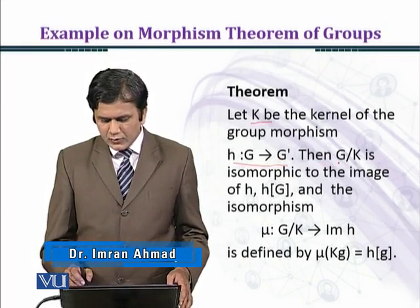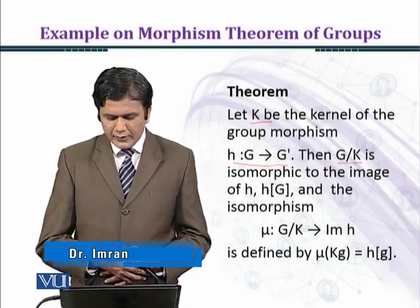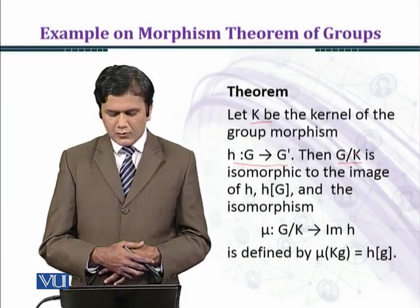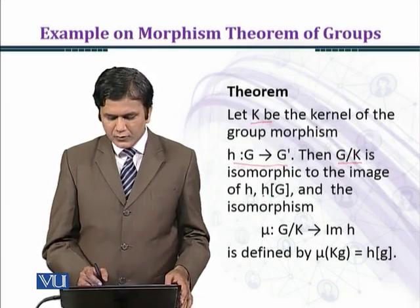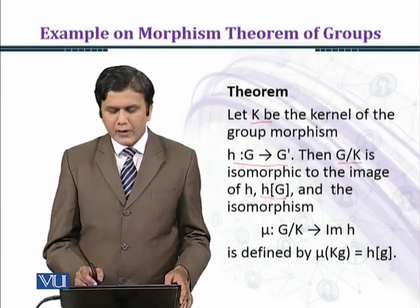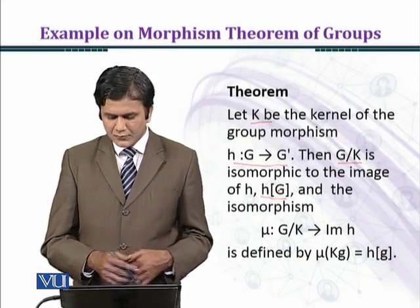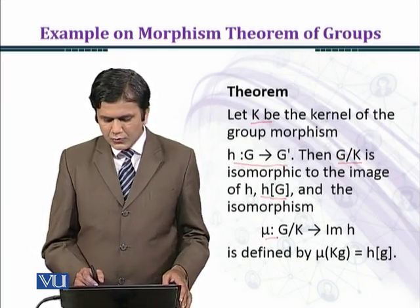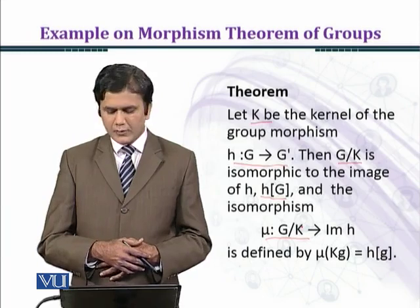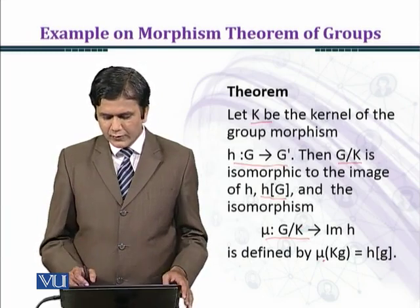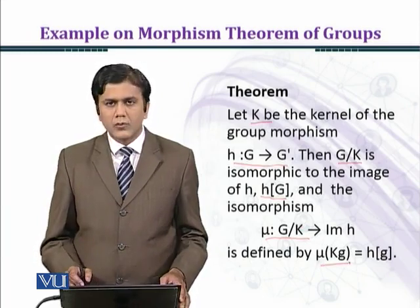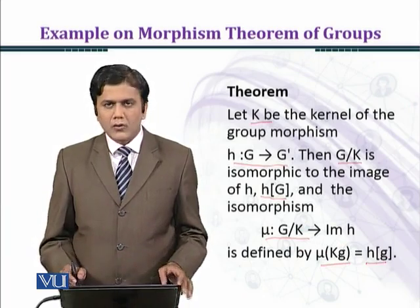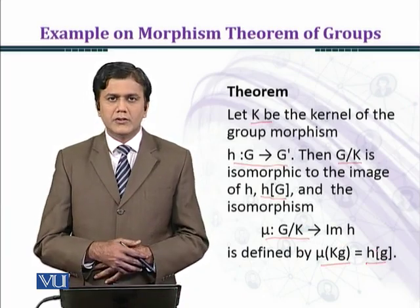Then G over K is isomorphic to the image of H, which is denoted by H(G), and the isomorphism mu from G over K to image of H is defined by mu(Kg) equal to H(g).